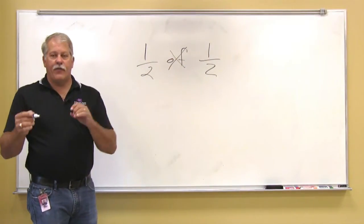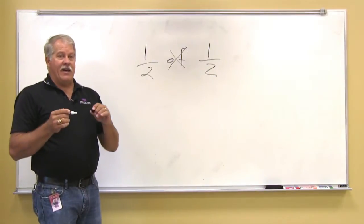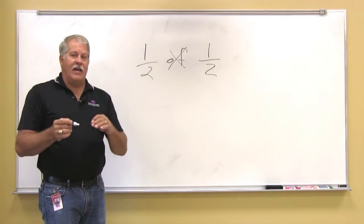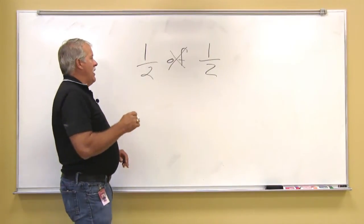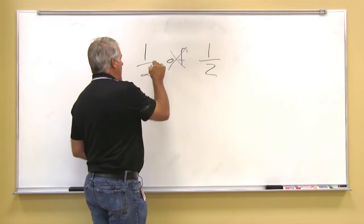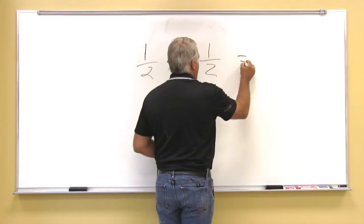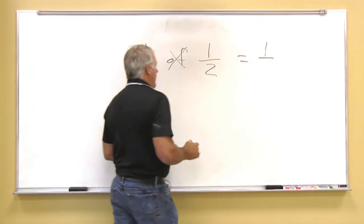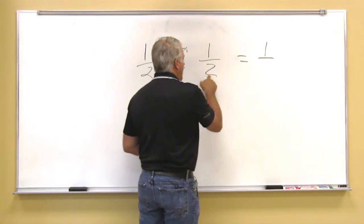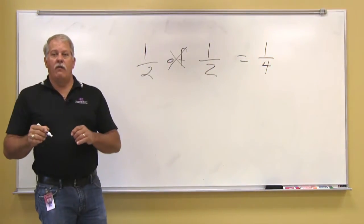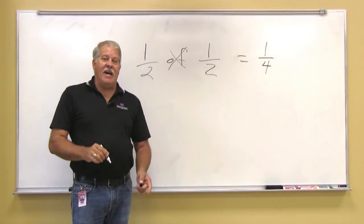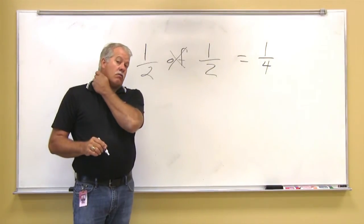When we're finding half of a fraction, we are actually, when you consider it, dividing that fraction in two. Well, 'of' means times, so we're just going to cross multiply. One times one is equal to one, and two times two is equal to four. So one fourth is half of one half.